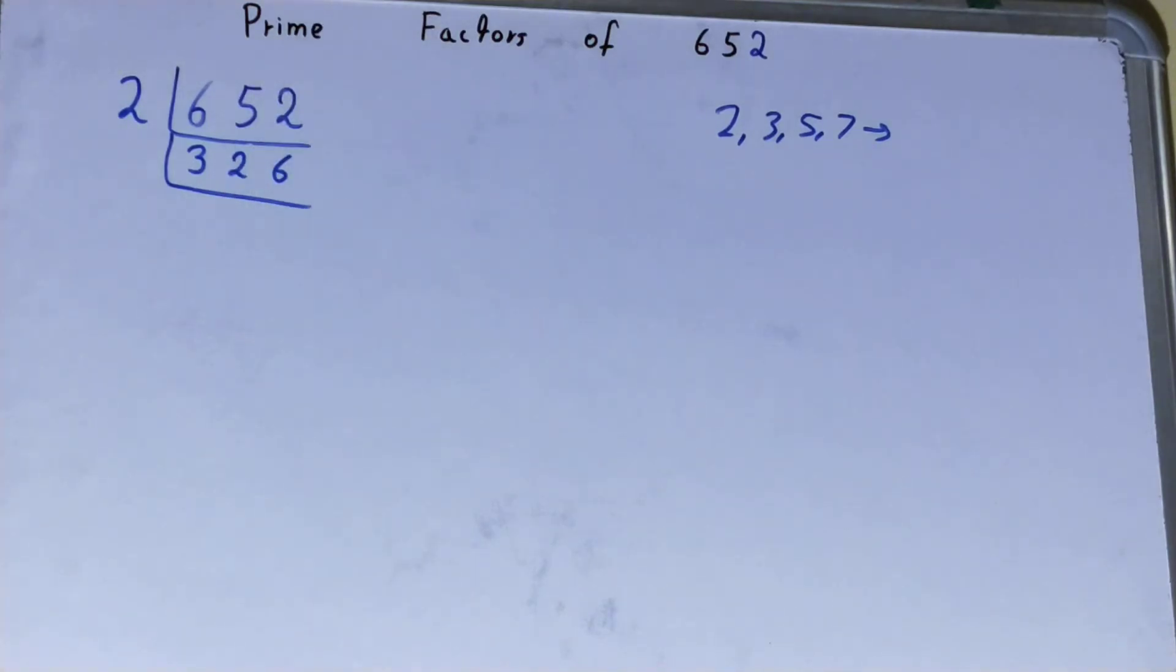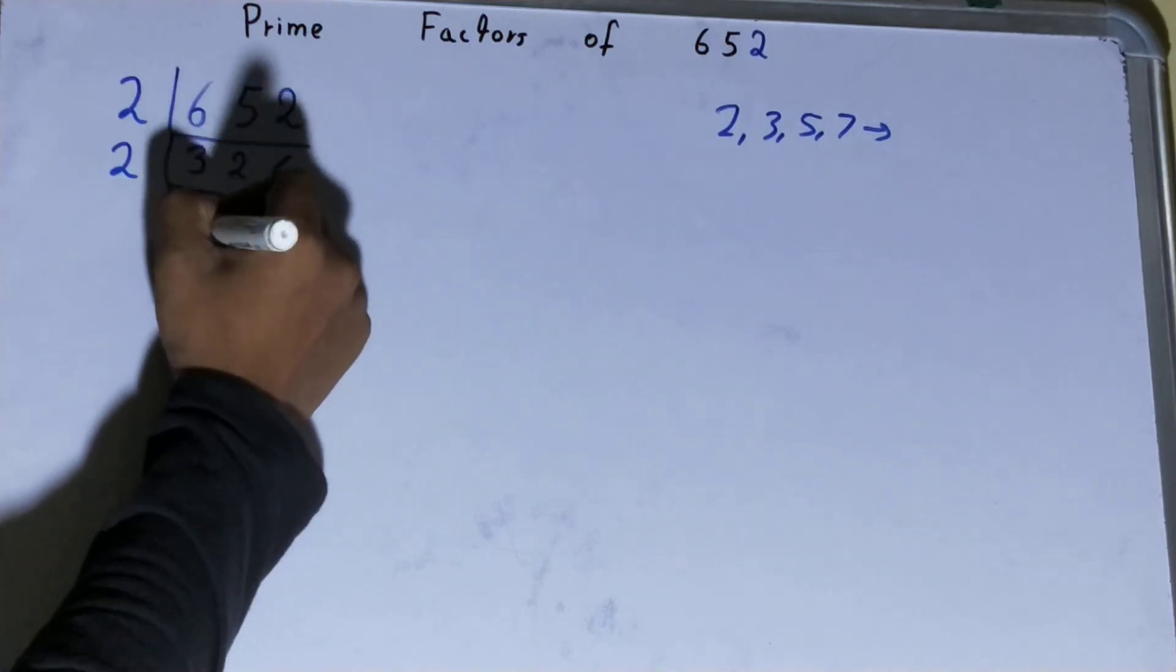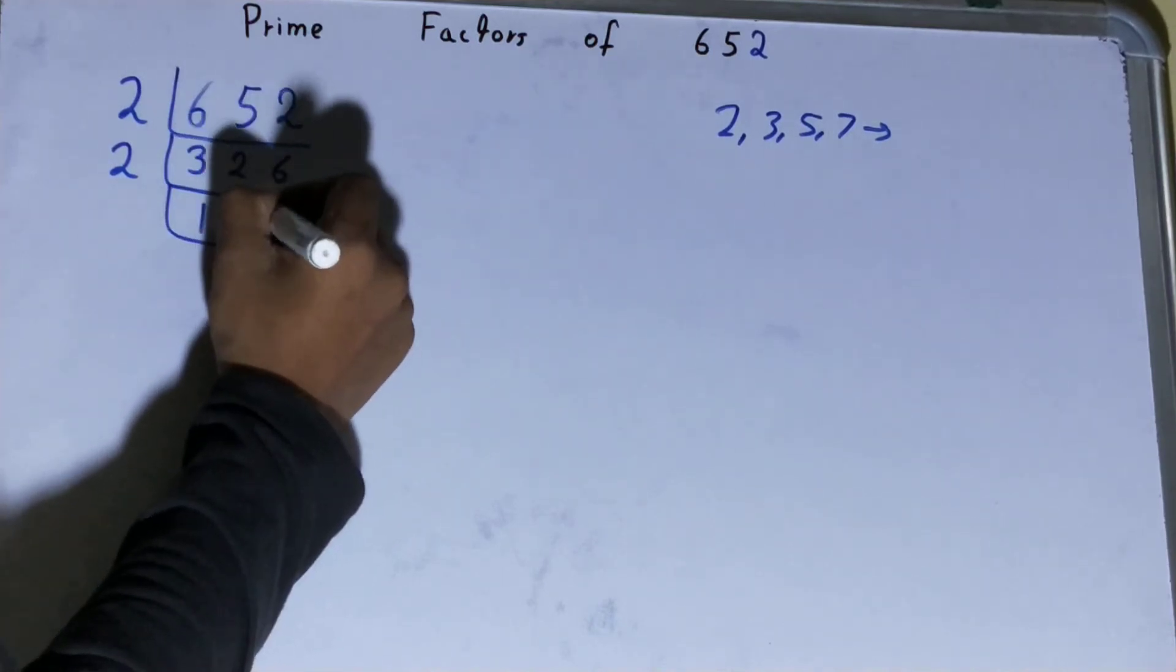Now is the number 326 further divisible by 2? The answer is yes, because 326 is also even. So divide it and you will be left with 163.